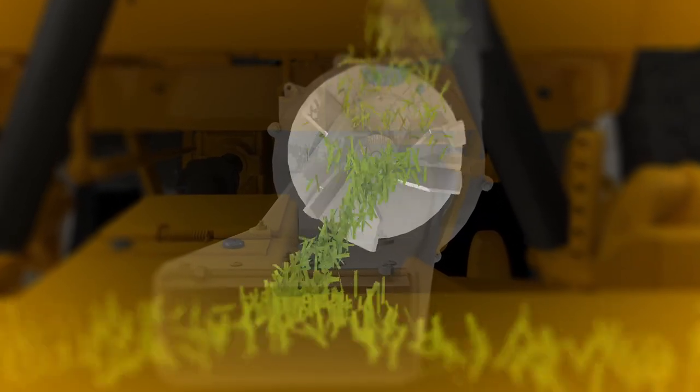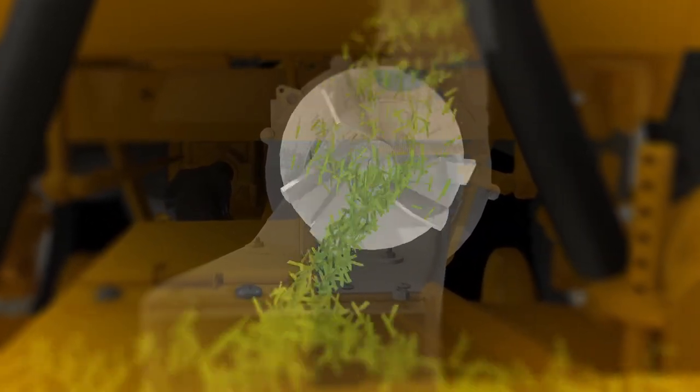The GHS blower is the heart of the Walker grass handling system. It acts as a second stage vacuum and propulsion system for clippings and debris.